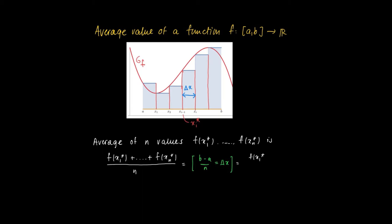So we still have the same sum f(x_1 star) etc. until f(x_n star), and now we divide by n which equals b minus a divided by delta x.